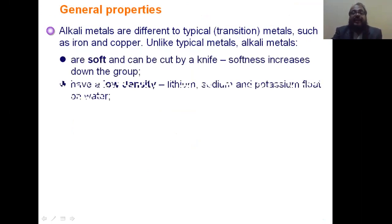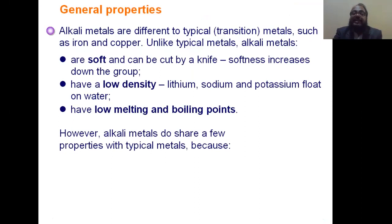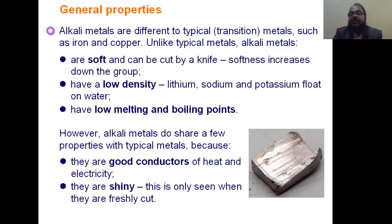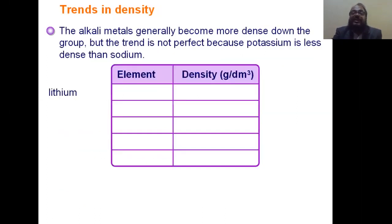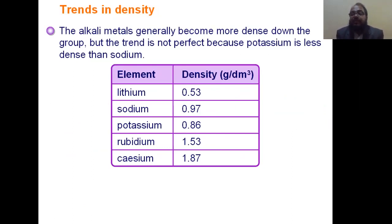The general properties of alkali elements: they are soft and can easily be cut by a knife, with softness increasing down the group. They have low density and low boiling point. Like all metals, they are good conductors of heat and electricity and have a shiny surface. The trend of density: density increases from top to bottom. Lithium has a density of 0.5, sodium 0.86, potassium 0.86, rubidium 1.53, and cesium 1.87.